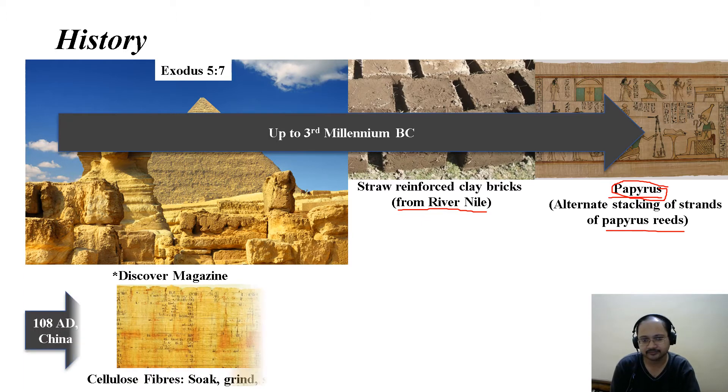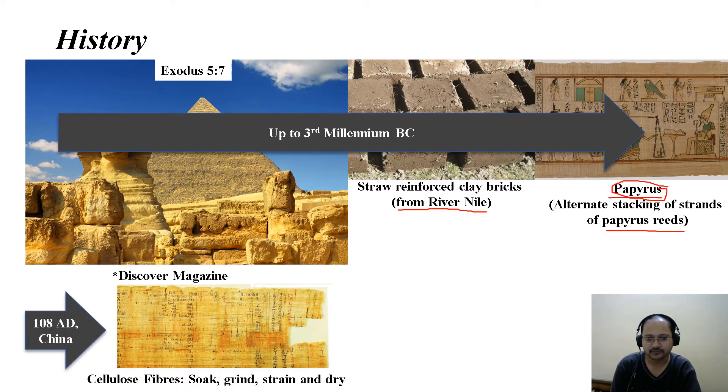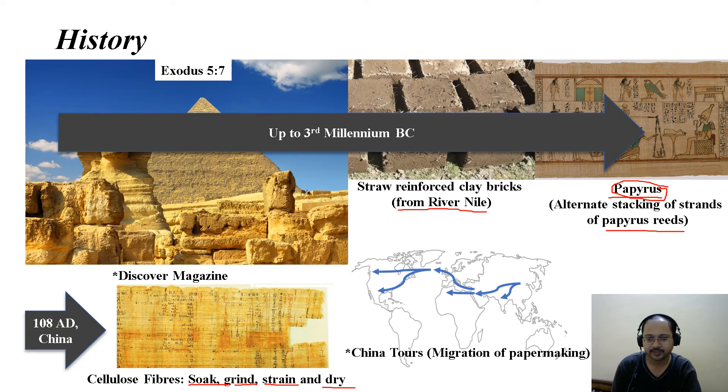Next, in 108 AD in China, cellulose fibers have been soaked, ground, strained, and then dried so that one can write on those cellulose papers. This is how paper manufacture has migrated across the world, as you can see from China to India to the Middle Eastern part to Europe and finally to the US.